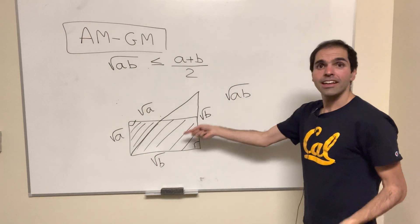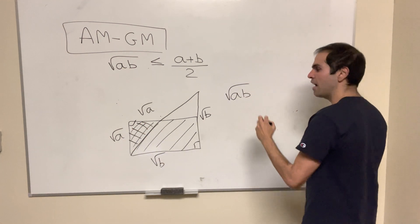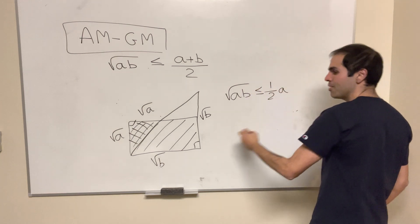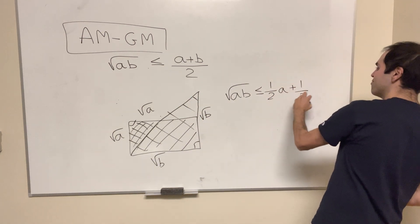On the other hand, the sum of the areas of the triangles is just one-half square root of a squared, so one-half a, plus one-half square root of b squared, which is one-half b.